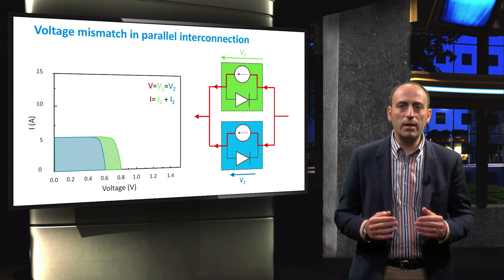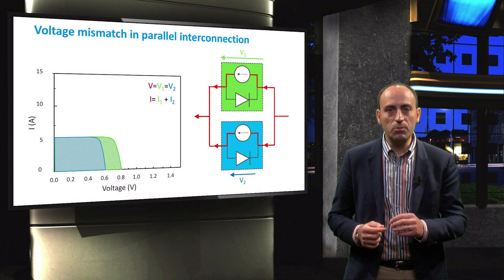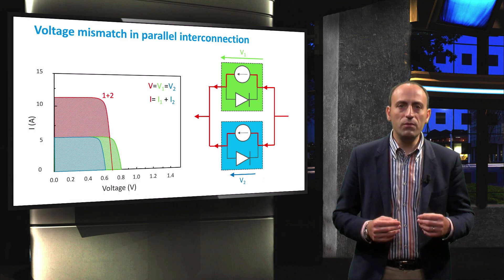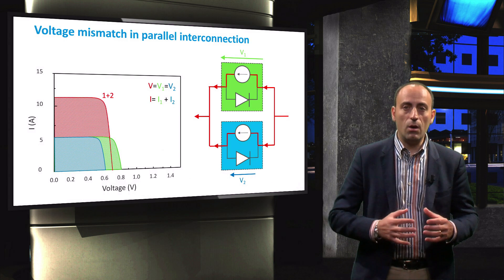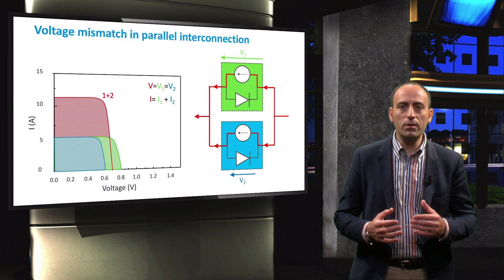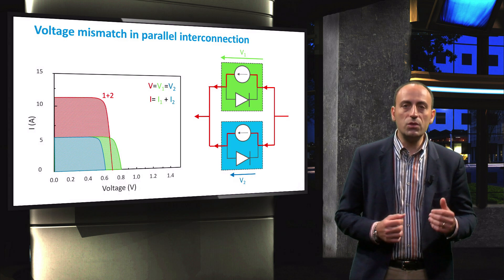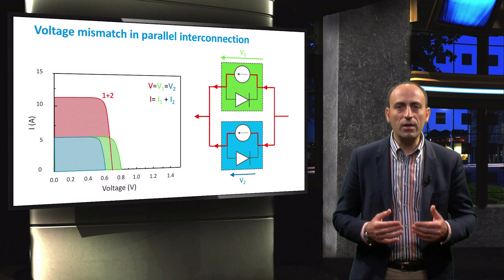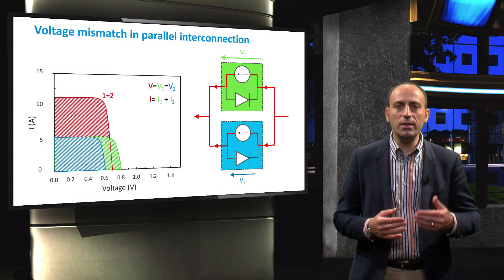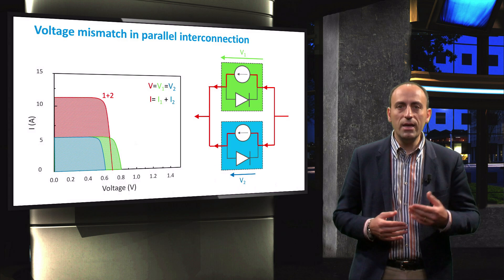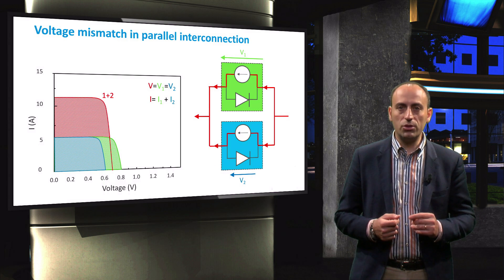In case of two parallel connected cells with a voltage mismatch, the currents of the individual cells are still summed. The combined VOC, however, is now somewhere in between that of VOC1 and VOC2. Again, you can find the combined voltage by means of a graphical approach in which the IV curve of cell 1 is mirrored with respect to the voltage axis.